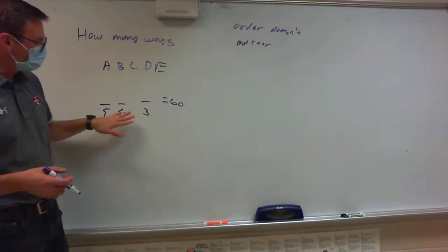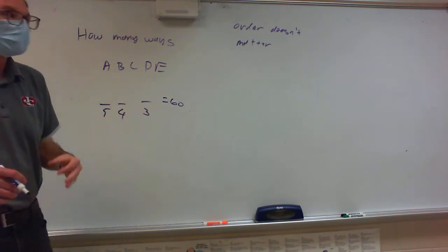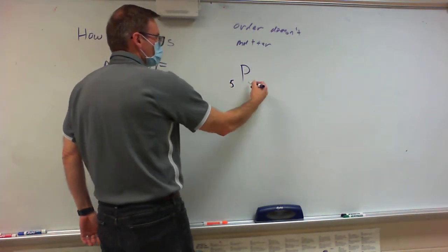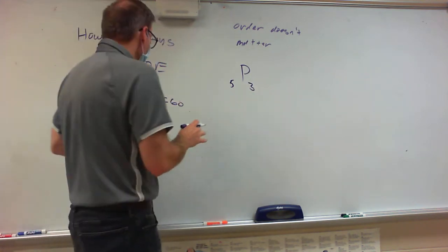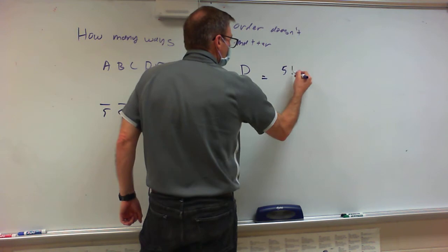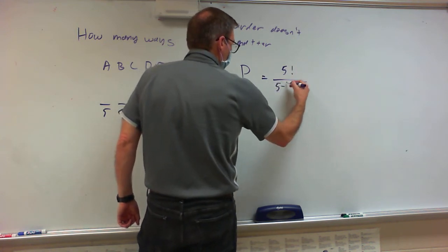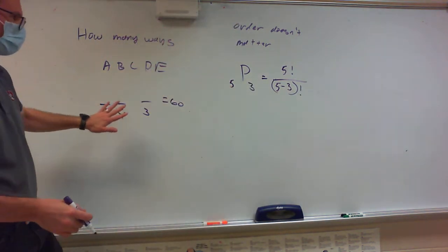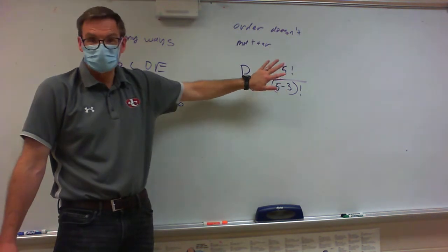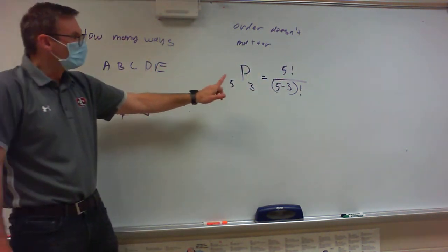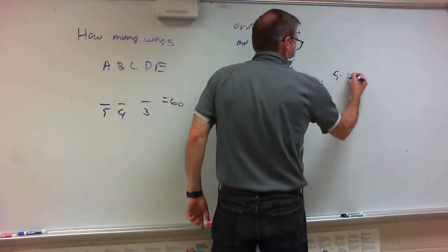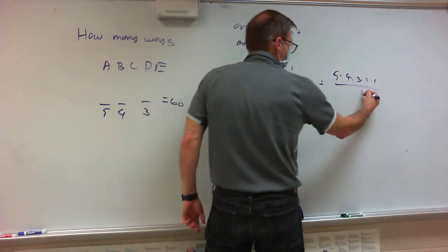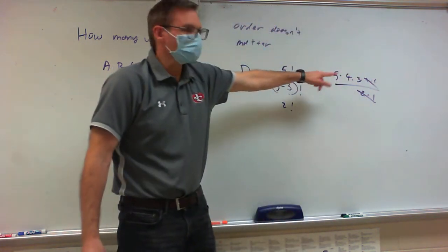Where did we get that 60? Where did we get the five times four times three? That was the permutation formula: the permutation of five things taken three at a time. That formula was five factorial over five minus three factorial. It's five times four times three times two times one, and five minus three is two factorial, so those two times one cancel, and that's where we get the five times four times three.